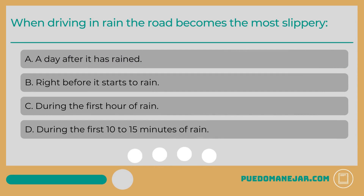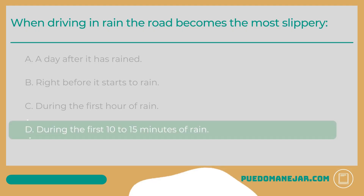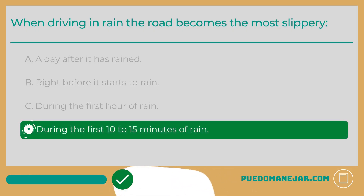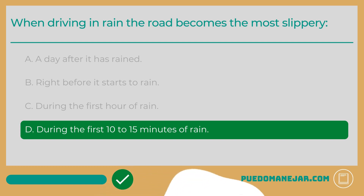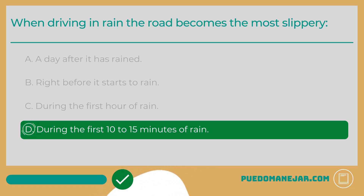When driving in rain, the road becomes the most slippery: A. A day after it has rained. B. Right before it starts to rain. C. During the first hour of rain. D. During the first 10 to 15 minutes of rain. The answer is D. The start of a rainstorm tends to be when the road's surface is most slippery. During the first 10 to 15 minutes of rain, oil on the road surface mixes with the rain, making for a more slippery surface than after the rain washes most of the oil away.